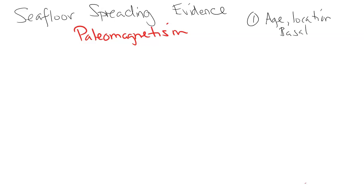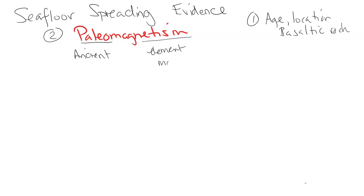The second piece of evidence is paleomagnetism. 'Paleo' means ancient, and magnetism refers to the magnetic field generated when electrons align in the same direction — that atomic force of aligned electrons creates a magnetic field. So, ancient magnetism — what does this have to do with the seafloor?